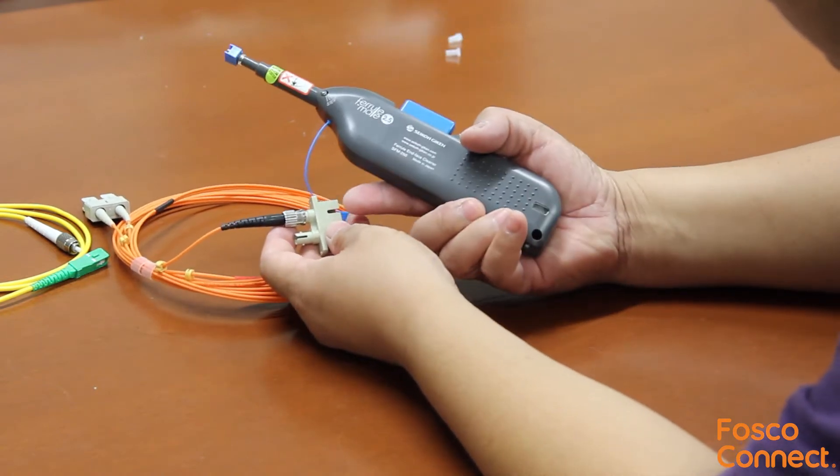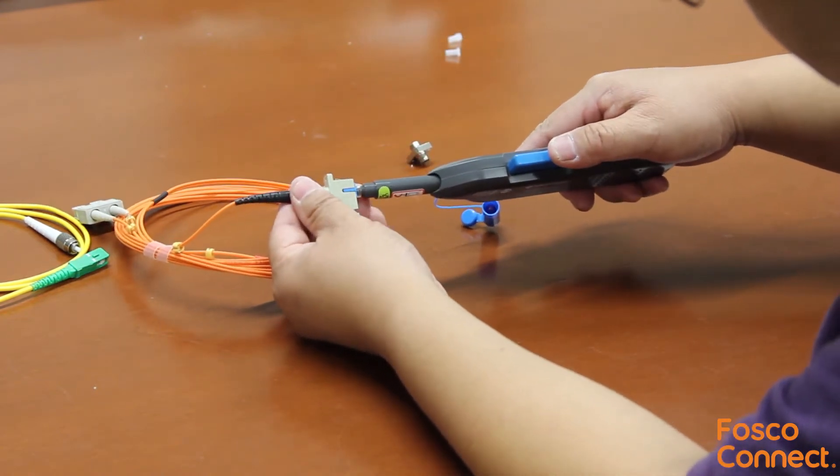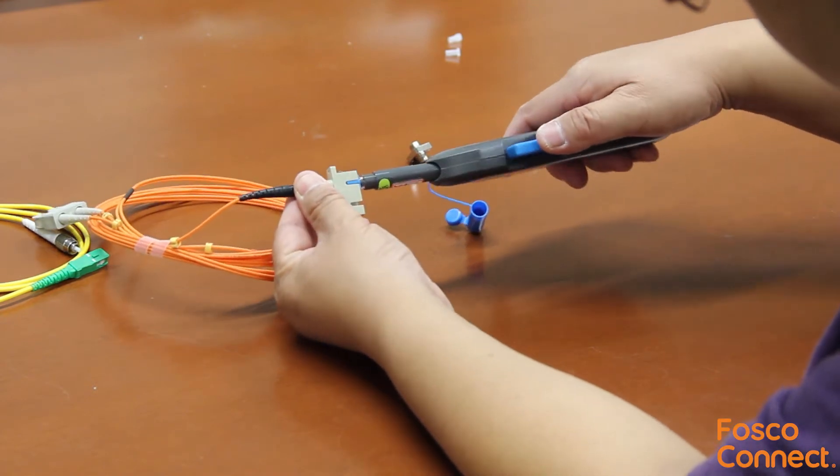Make sure the SC adapter key is aligned with the keyhole on the adapter. Enter the cleaner into the adapter. Keep the pressure. One click, and it's done.